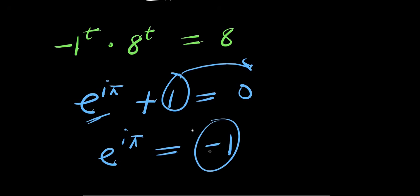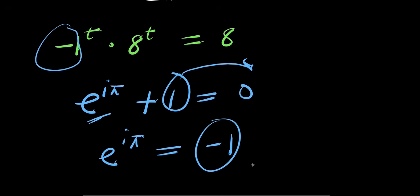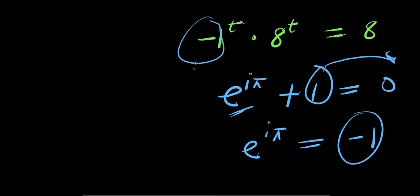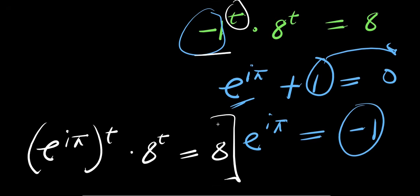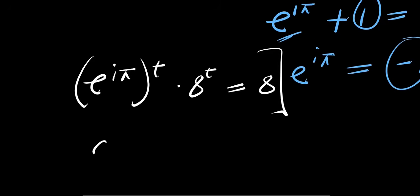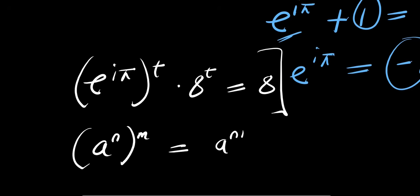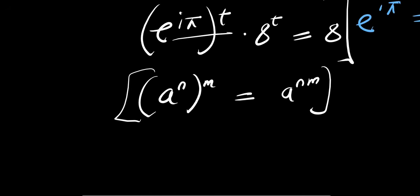So if e to the power i times pi equals negative 1, and I have negative 1 here, I can replace negative 1 with e to the power i times pi. So instead of negative 1 to the power T, I have e to the power i times pi, raised to the power T, times 8 to the power T equals 8. Using the identity A to the power N raised to the power M equals A to the power N times M, I multiply the exponents.